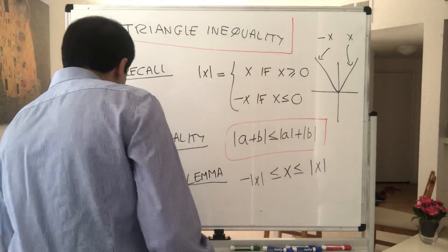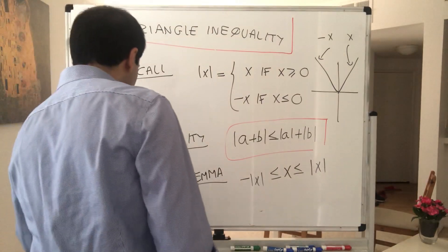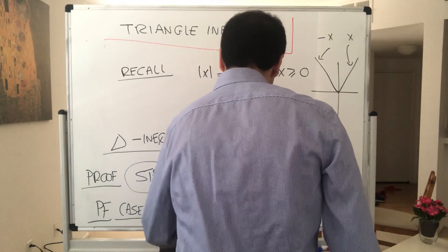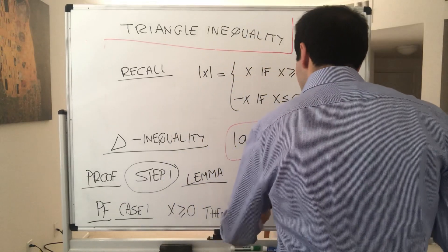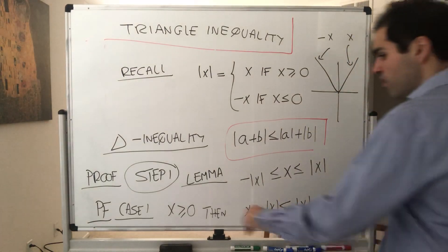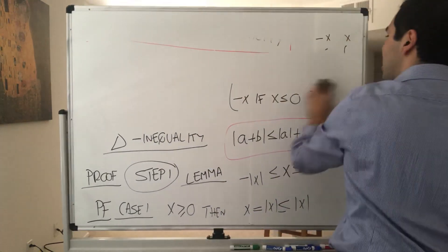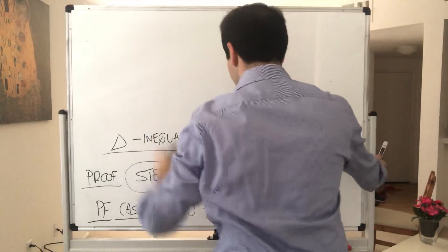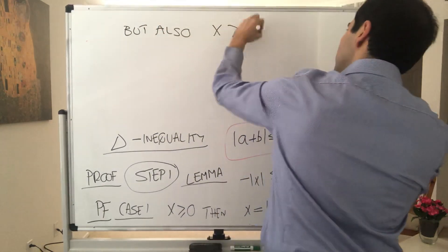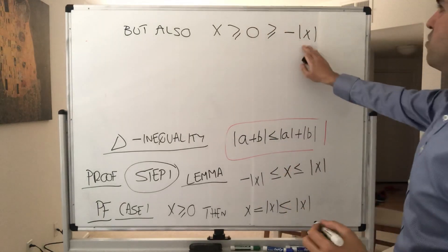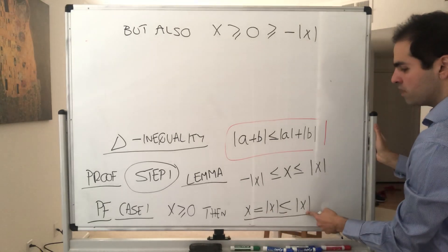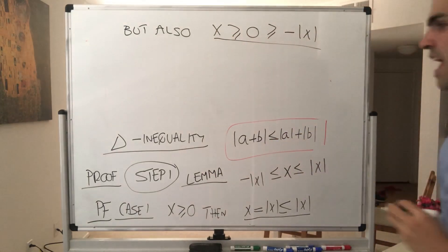Why is that true? Well, just consider two cases. If x is positive, then x equals its absolute value, and therefore x is less than or equal to its absolute value. On the other hand, since x is positive but minus the absolute value is negative, we also get the other side. So x is less than or equal to its absolute value, but x is also greater or equal to its negative absolute value.